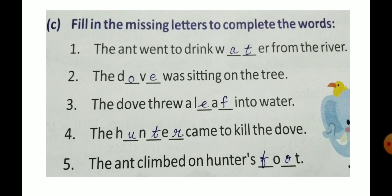The dash was sitting on the tree — the dove was sitting on the tree. Missing letters: O and E. The dove threw a dash into water — the dove threw a leaf into water. Missing letters: E and F. The dash came to kill the dove — the hunter came to kill the dove. Missing letters: U, T, and R.